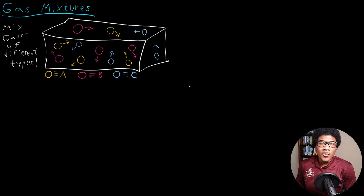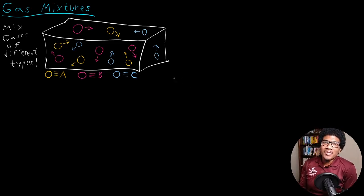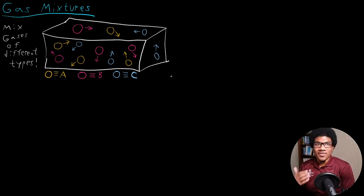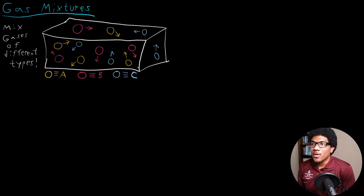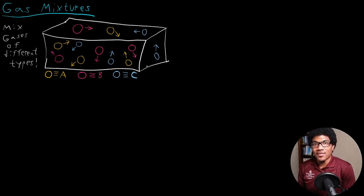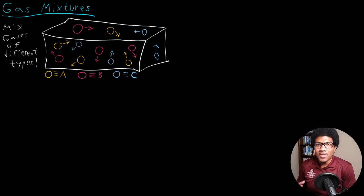In this video, we're going to discuss gas mixtures. The gases we've talked about at this point have all been composed of a single molecule or a single type of particle. What happens when you have a scenario like in this figure, where instead of having a single gas particle, we have three different identities of gases that are all in the same mixture in the same container?